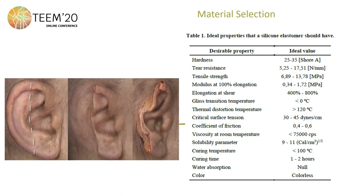Now it is the turn of the selection of the suitable material for the prosthesis. It is necessary to take into account the materials that are originally present in the area of the ear, to find a material that is compatible with human tissue and presents similar characteristics, both chemical, physical, mechanical, and aesthetic properties.